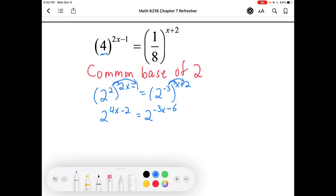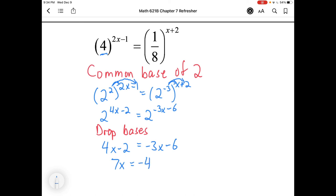Now things are looking pretty good. We can drop our bases because they are common. And we're just making the little logical step that if both sides are the same and both bases are the same, then that must mean both exponents are the same. We have 4x minus 2 equals negative 3x minus 6. Just move some stuff around. 7x on this side by adding 3x. Add 2 to the other side. So we get 7x equals negative 4 or x equals negative four-sevenths.